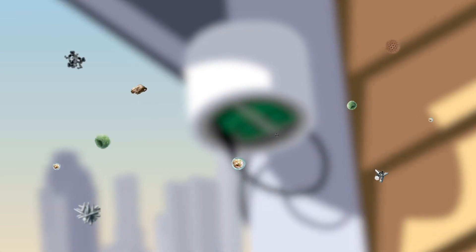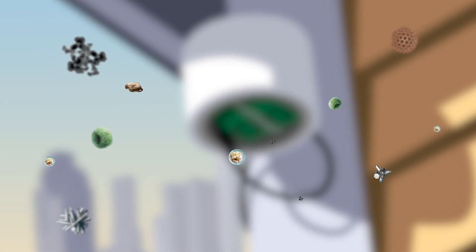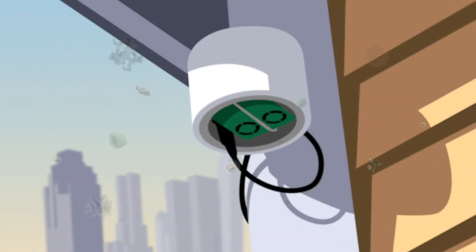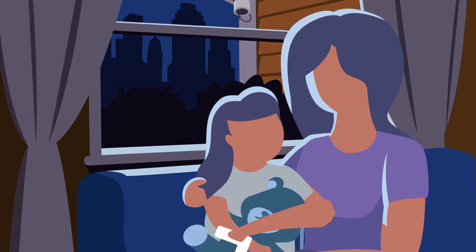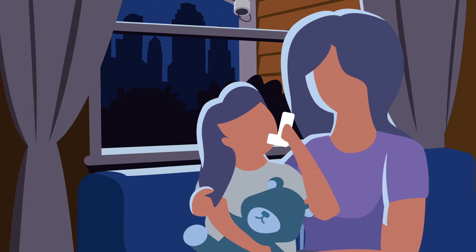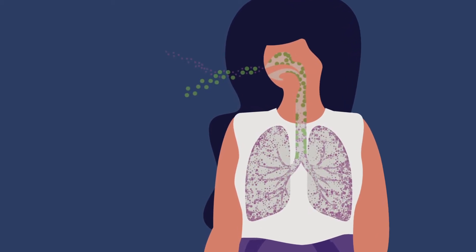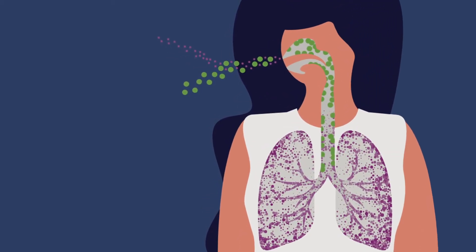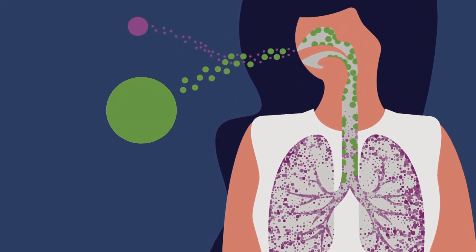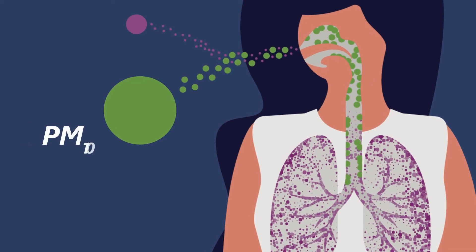Particulate matter, known as PM, is a mixture of solid and liquid droplets in the air. Particle pollution can aggravate asthma and even cause premature death in people with heart or lung disease. Particles are measured in microns and are more harmful the smaller they are. Coarse particles, known as PM10, can irritate the upper respiratory tract. Fine particles, called PM2.5, penetrate deep into the lungs.